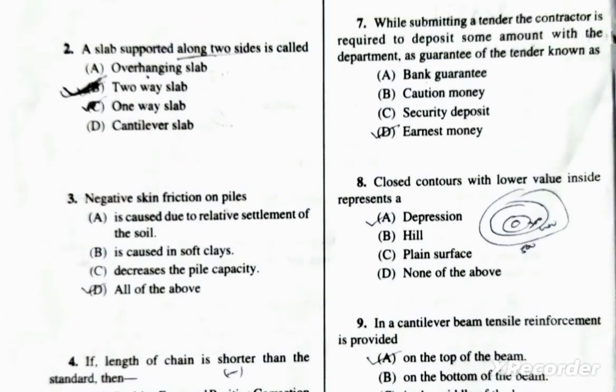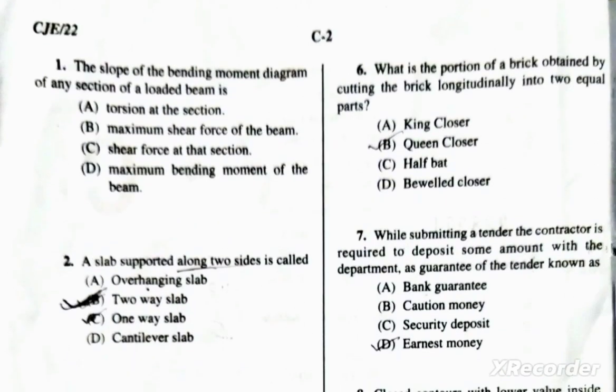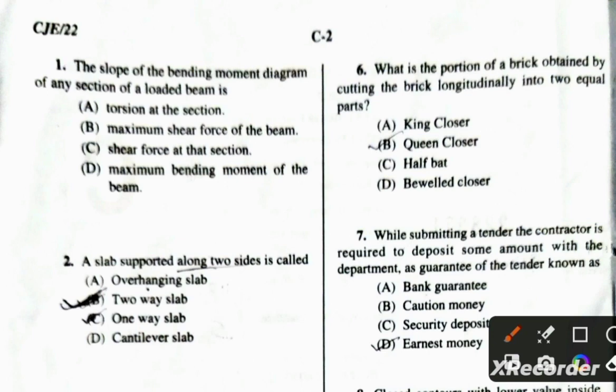The next question: what is the portion of a brick obtained by cutting the brick longitudinally into two equal parts? The correct answer is queen closure. Queen closure is the correct answer for a brick cut longitudinally into two equal parts.